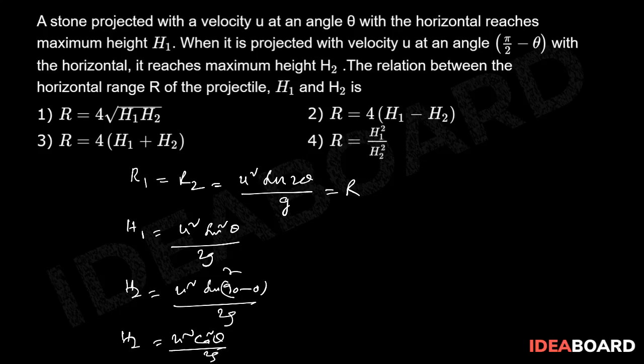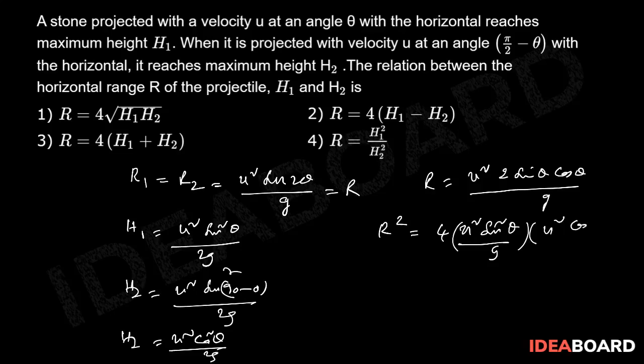R squared equals 4 times u squared sine squared θ by g times u squared cos squared θ by g. Now multiply with 4, divide with 4.